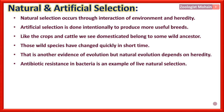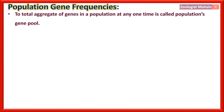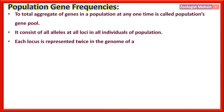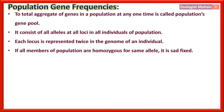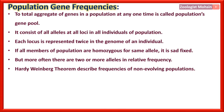Population gene frequencies: The total aggregate of genes in a population at any one time is called the population gene pool. It consists of all alleles at all loci in all individuals of the population. Each locus is represented twice in the genome of a diploid individual. If all members of the population are homozygous for the same allele, it is called a fixed allele. More often there are two or more alleles at relative frequency. The Hardy-Weinberg theorem describes frequencies of non-evolving populations.